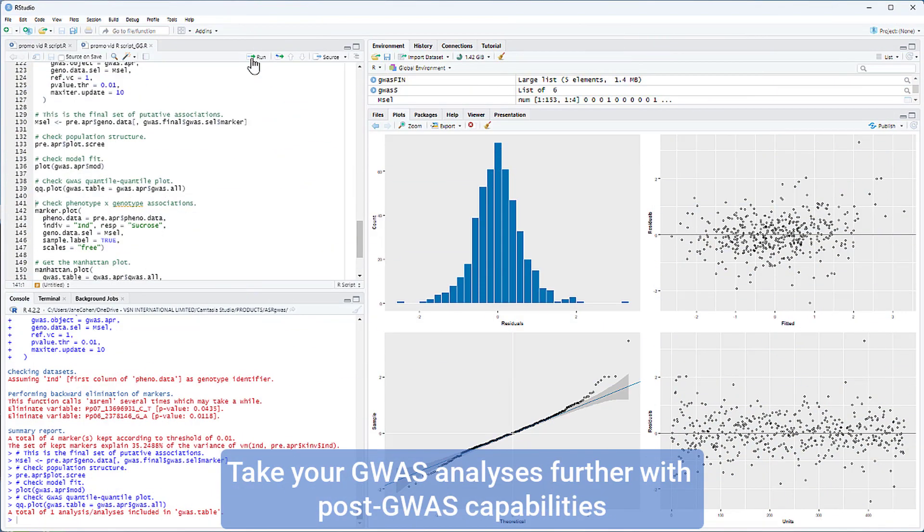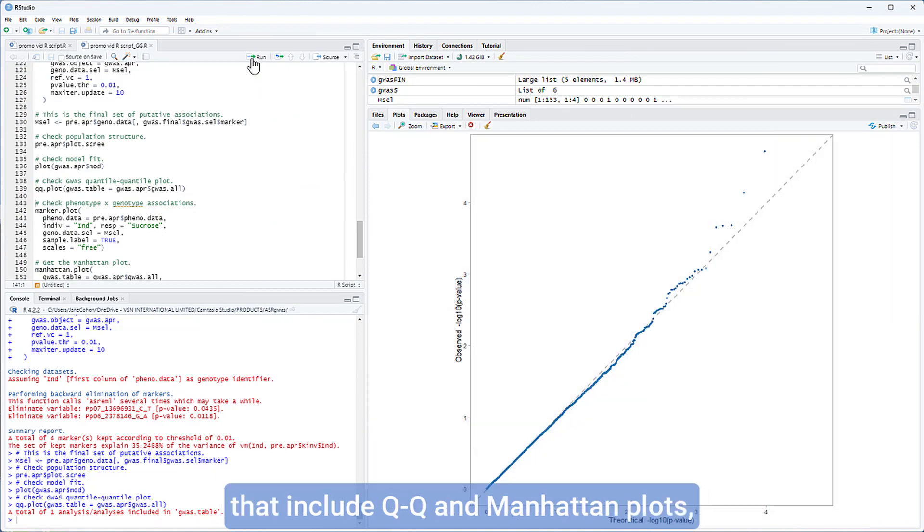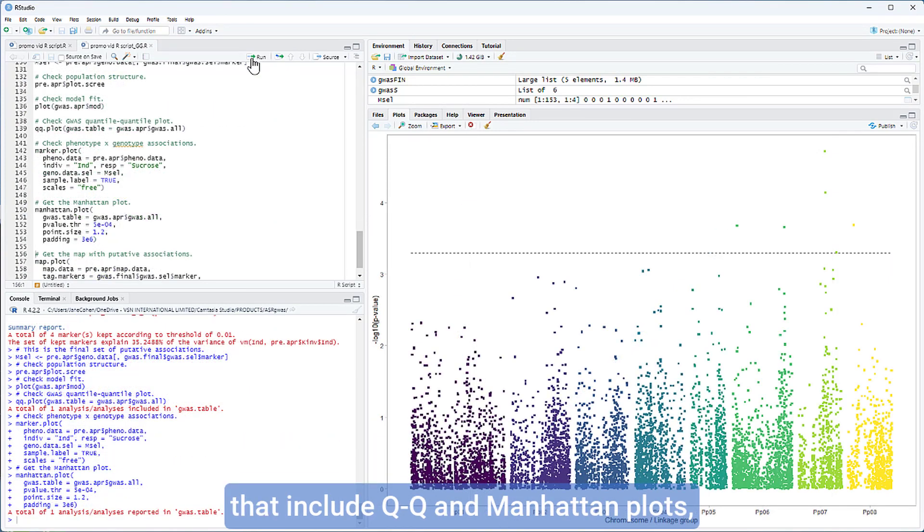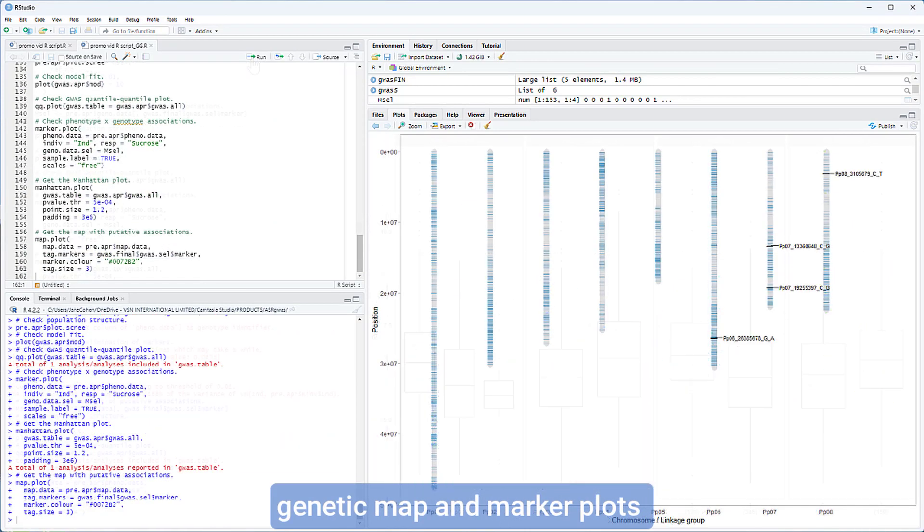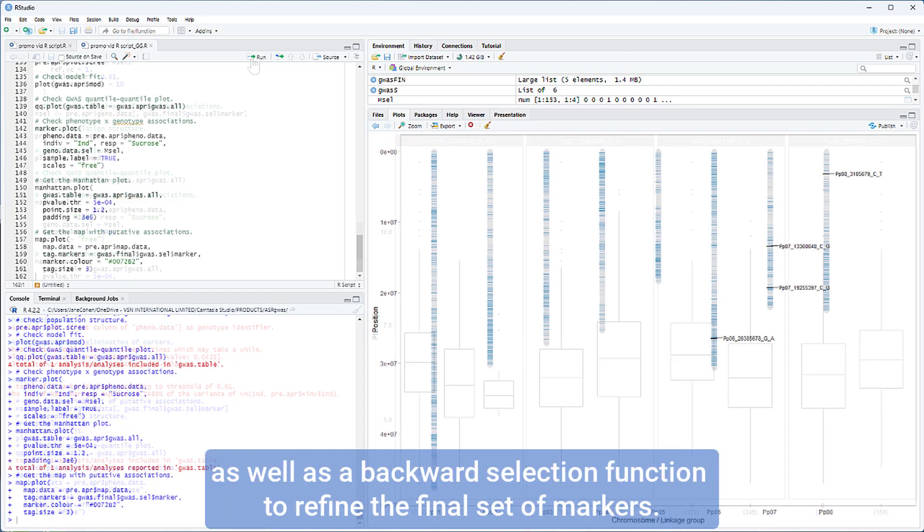Take your GWAS analyses further with post-GWAS capabilities that include QQ and Manhattan plots, genetic map and marker plots, as well as a backward selection function to refine the final set of markers.